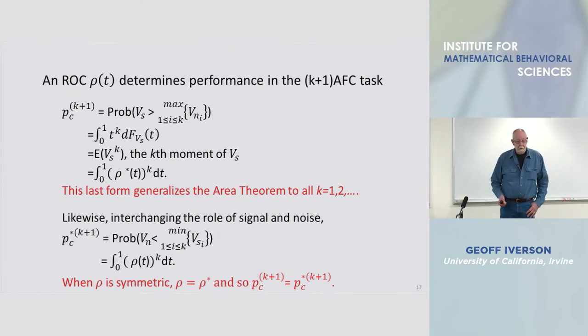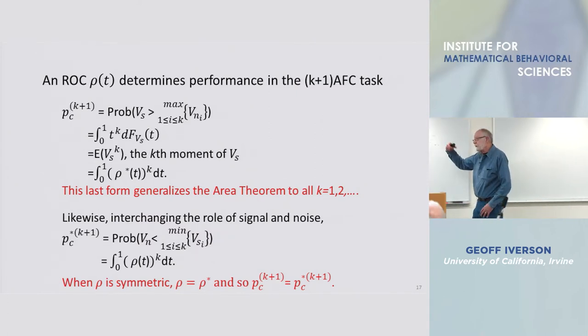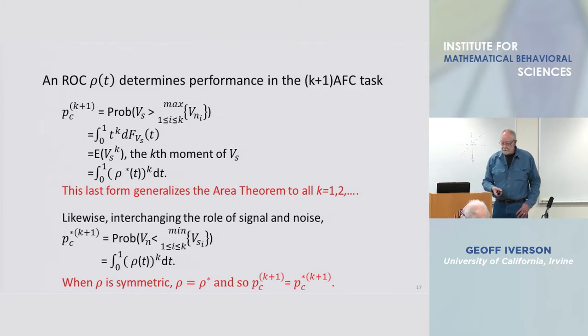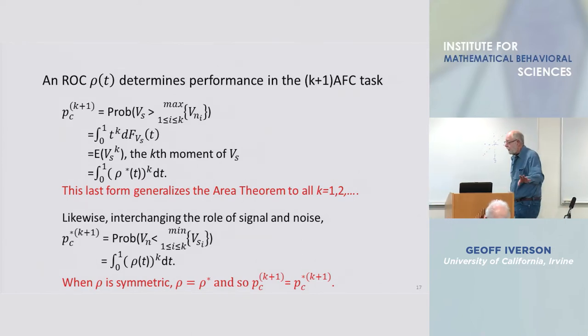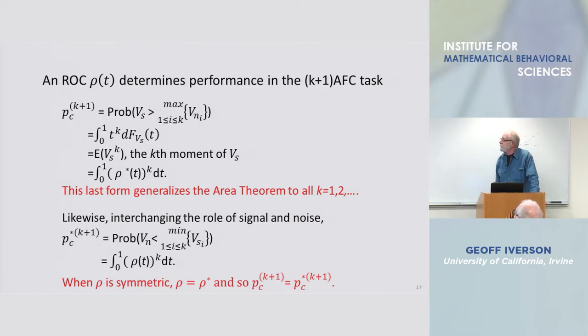In fact, Green and Moses would be puzzled by this because they would put k equals one to get the two-interval data and they wouldn't understand the dual.